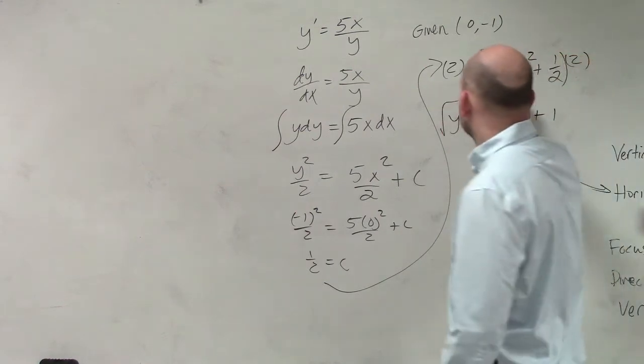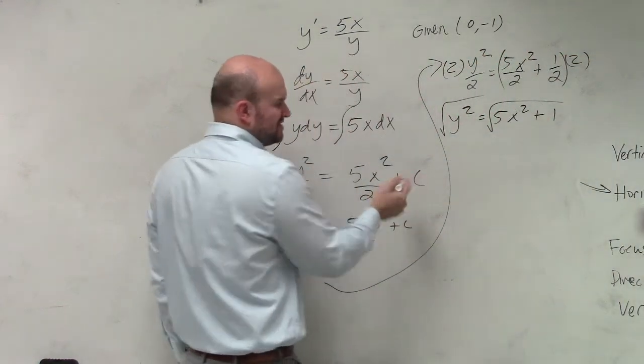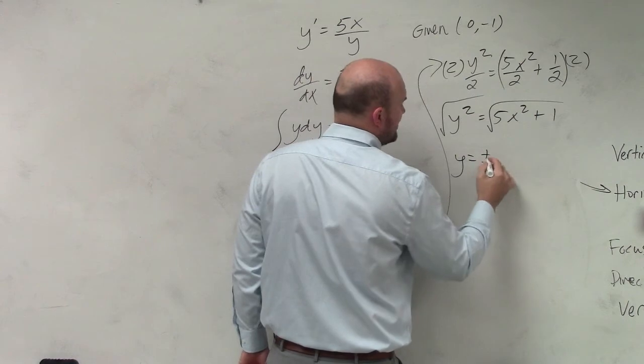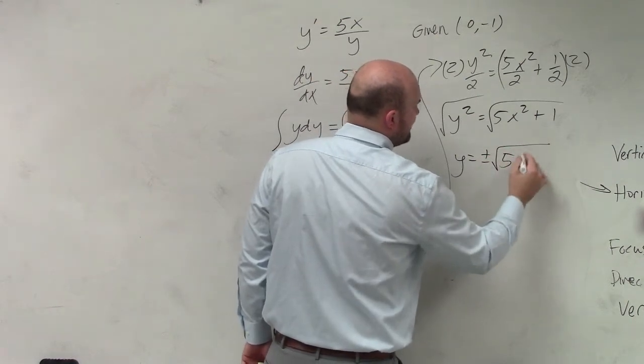Then remember, when you take the square root on both sides to get to y, you have y equals plus or minus the square root of 5x squared plus 1.